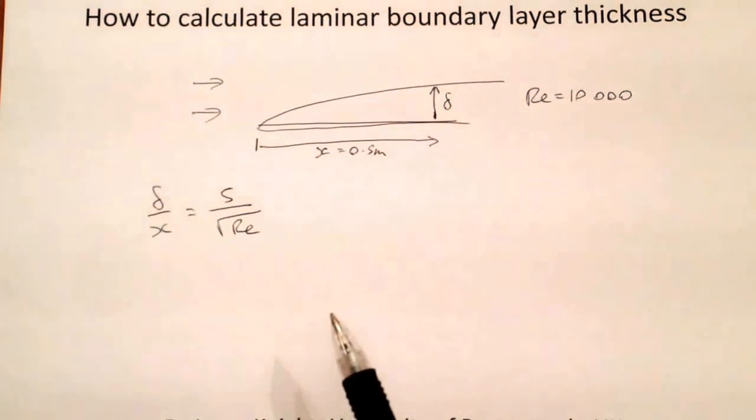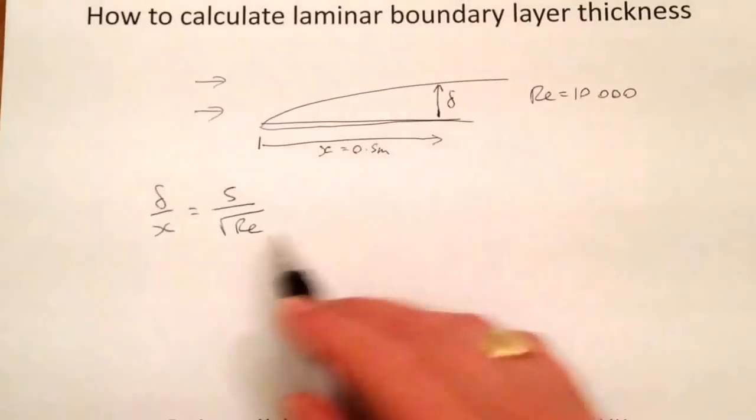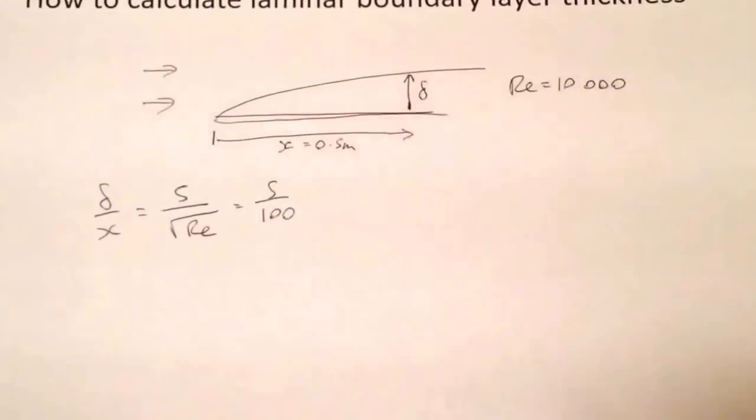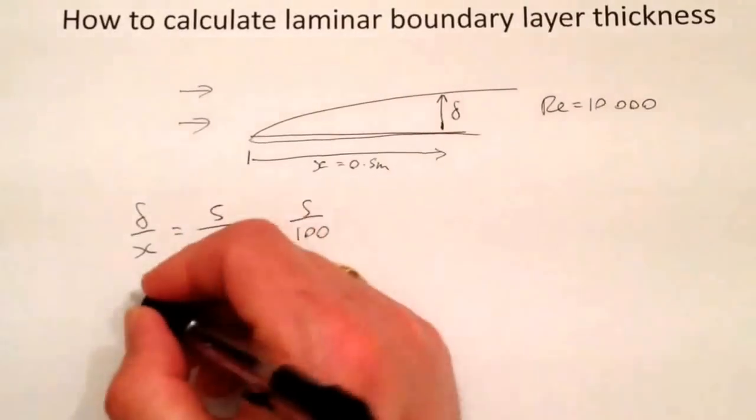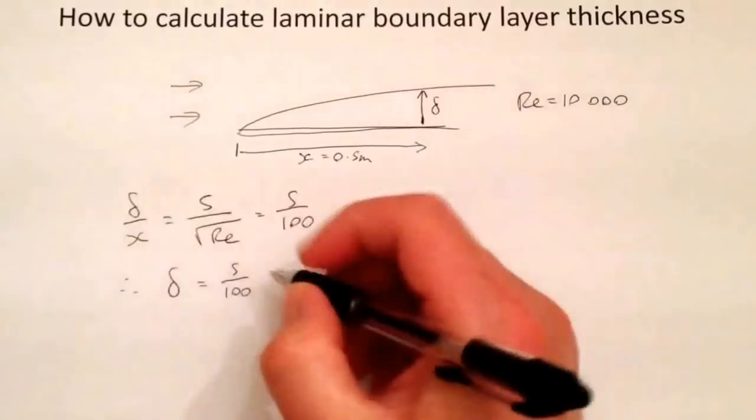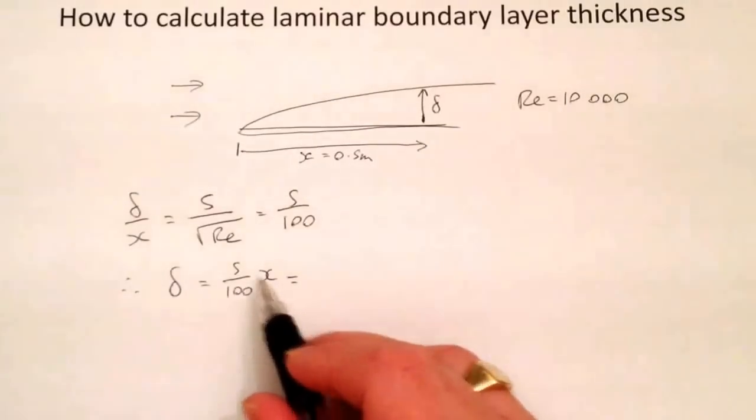So in our example the Reynolds number is 10,000. So the square root of 10,000 is a hundred. So we have five divided by a hundred. So therefore the boundary layer thickness is going to be five divided by a hundred times by x. And in this case x is a half.